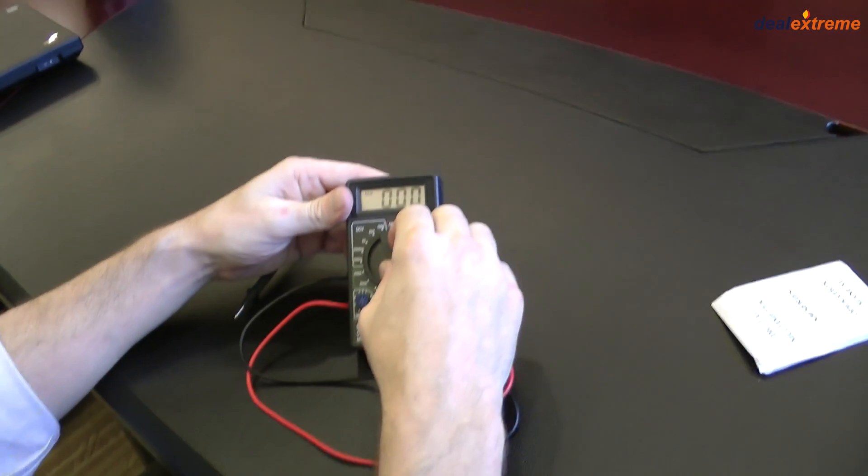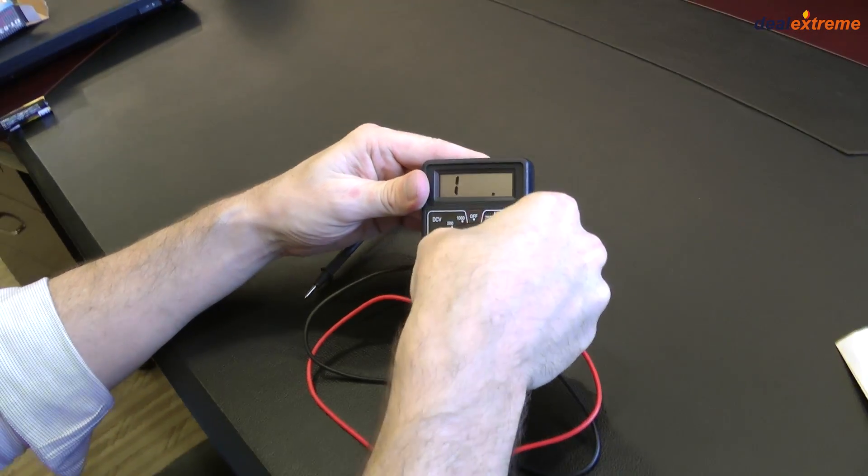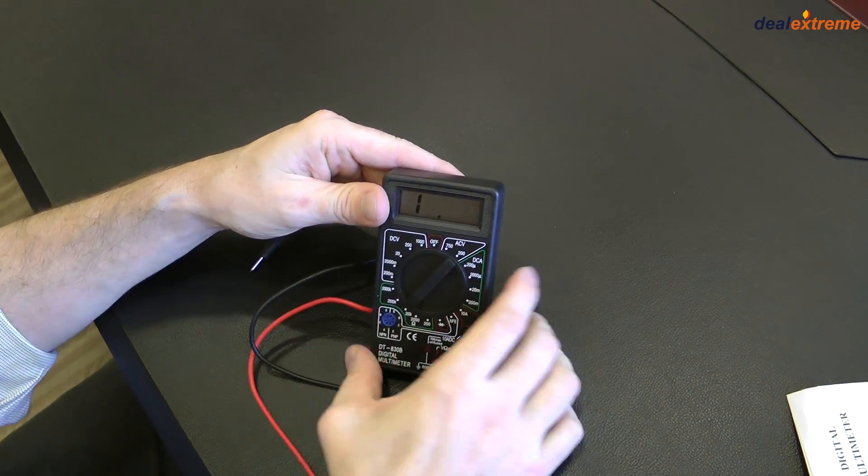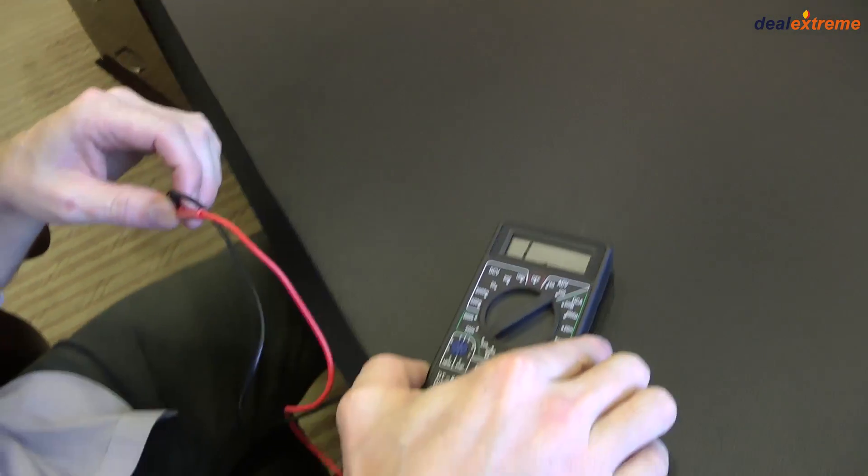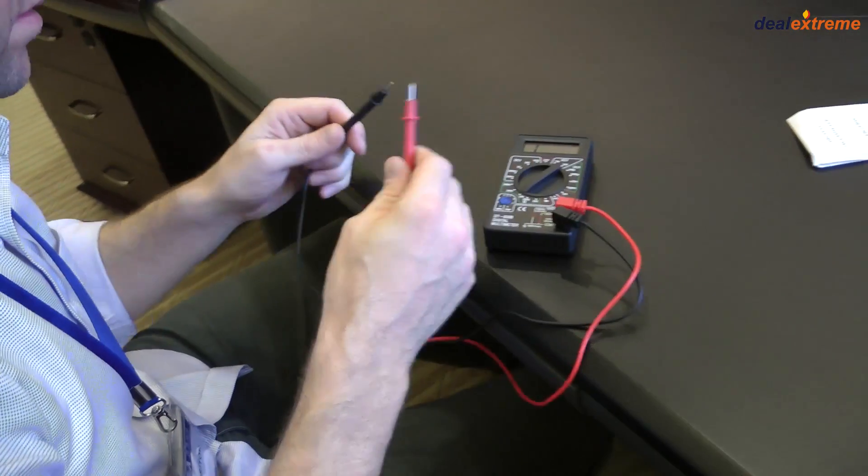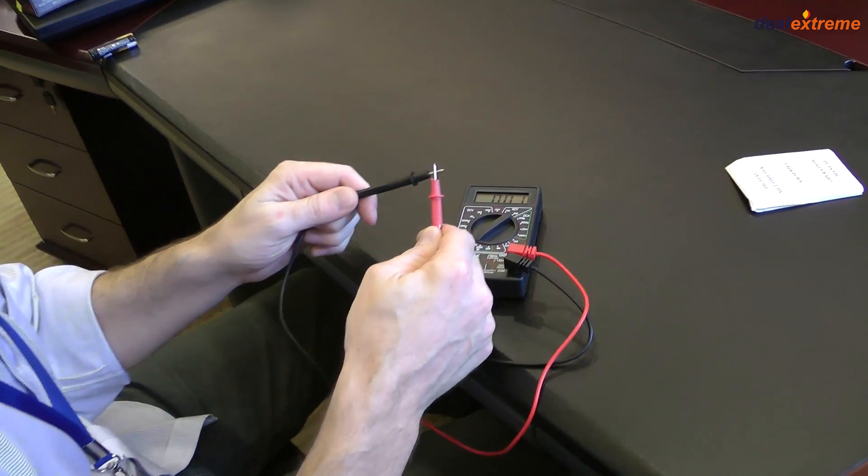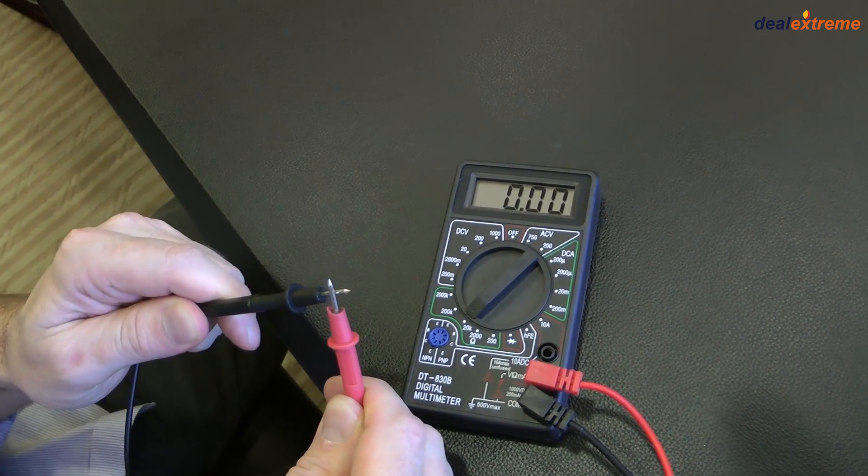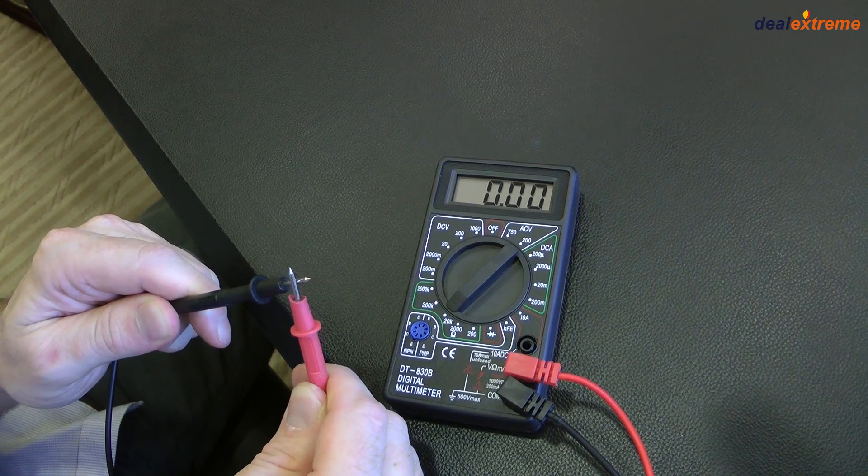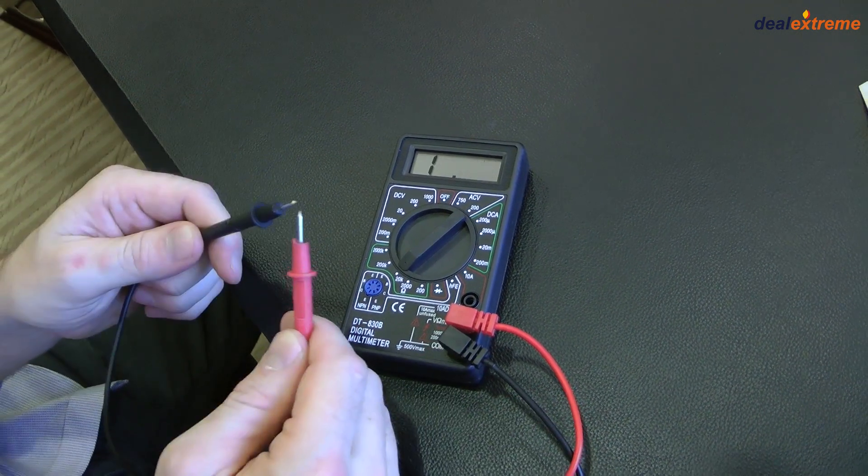First we'll check resistance. So I'll bring this down into the ohm section and we'll take a look. As you can see with just a test on the leads, we have essentially zero resistance, meaning we have a correct reading of no resistance through just the leads.